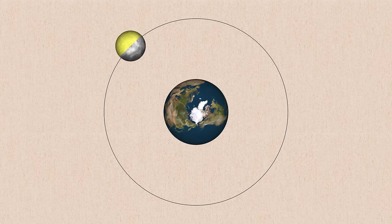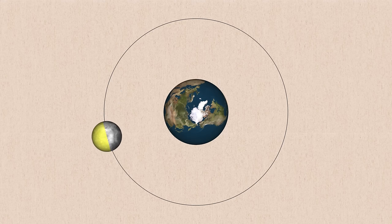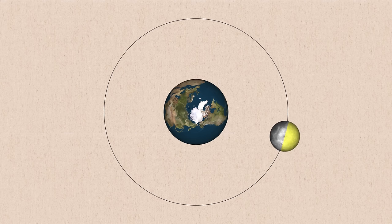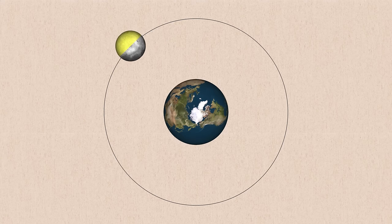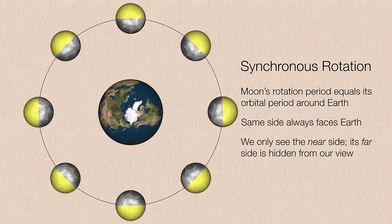So how is it that we could only see the near side of the moon, no matter where it is in its revolution around the earth? The answer is timing. The rotation period is exactly equal to its orbital period. As the moon revolves around the earth, it also executes a single rotation on its axis, keeping the near side facing the earth throughout the entire lunar orbit. We call this synchronous rotation.